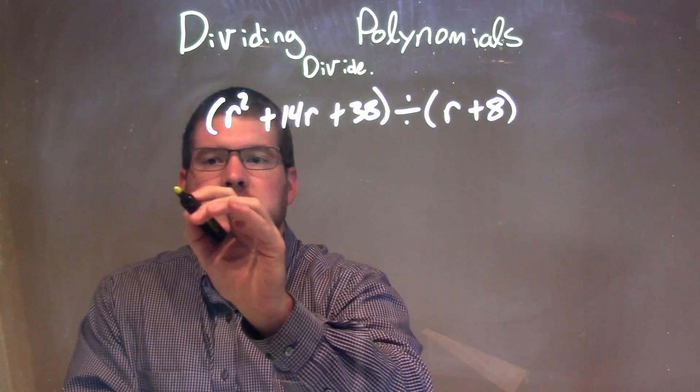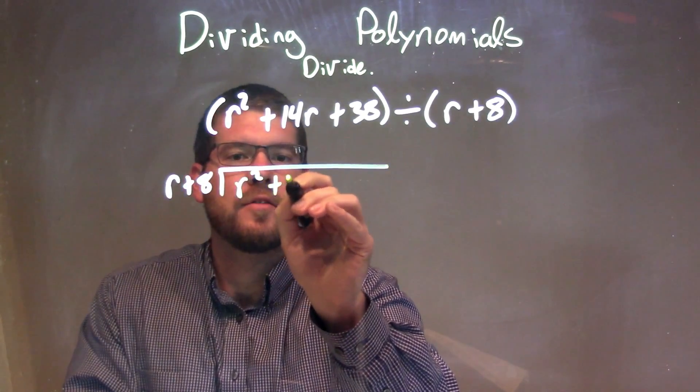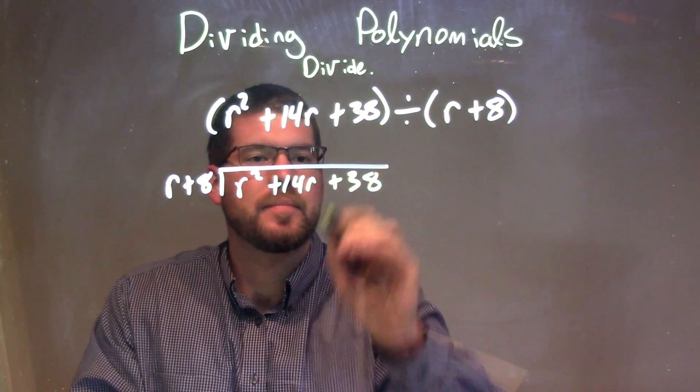Well, I'm going to set this up with long division, so I have my r plus 8 here, and that goes into my r squared plus 14r plus 38.